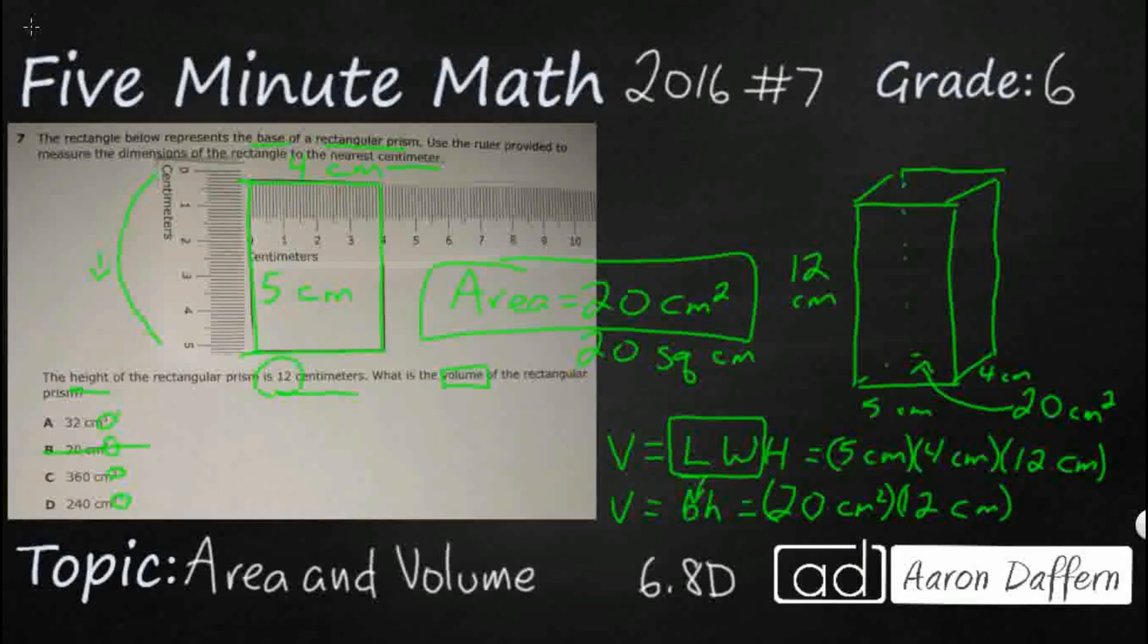Well, either way you get it, you're going to get 20 times 12. That's going to be 240 cm cubed. It is cubed because we're dealing with volume. That is a three-dimensional measurement, and so we're looking at D.